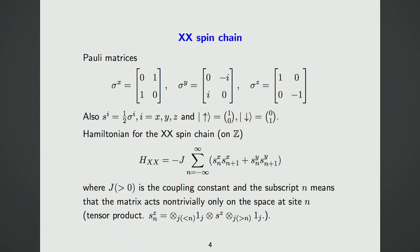We are interested in a particular quantum spin chain called the XX spin chain. First let's introduce notation for the two-by-two Pauli matrices sigma-X, sigma-Y, and sigma-Z, defined in the standard way. It is also useful to introduce the spin matrices S^i = sigma^i / 2, and the ket vectors for up-spin (represented by (1,0)) and down-spin (represented by (0,1)).